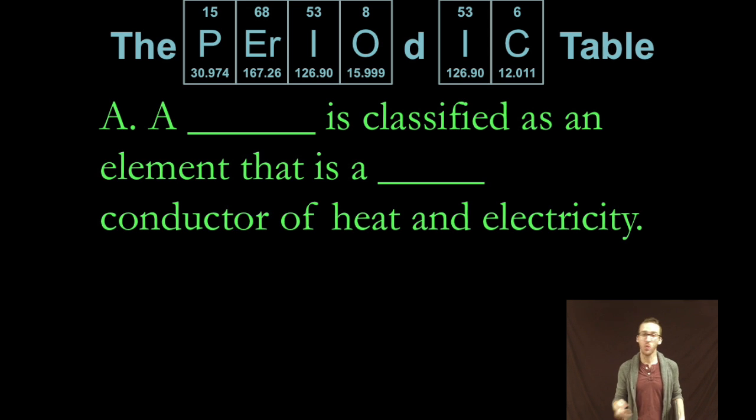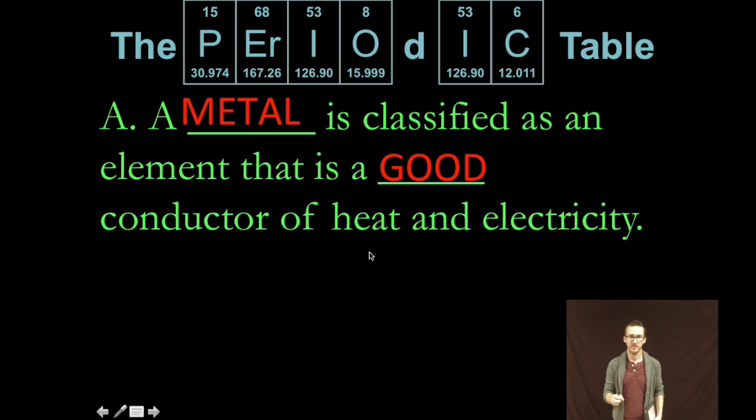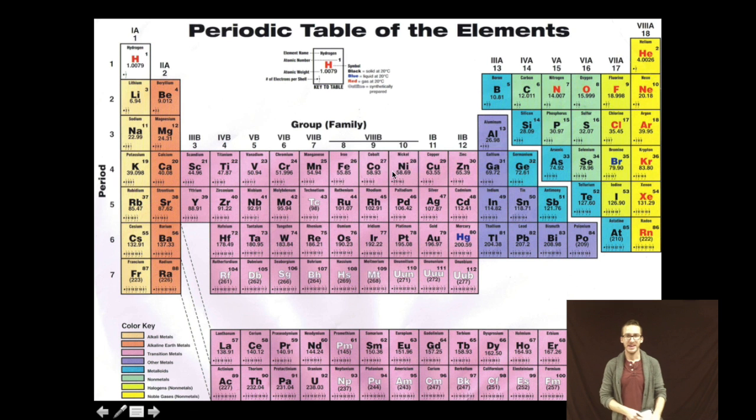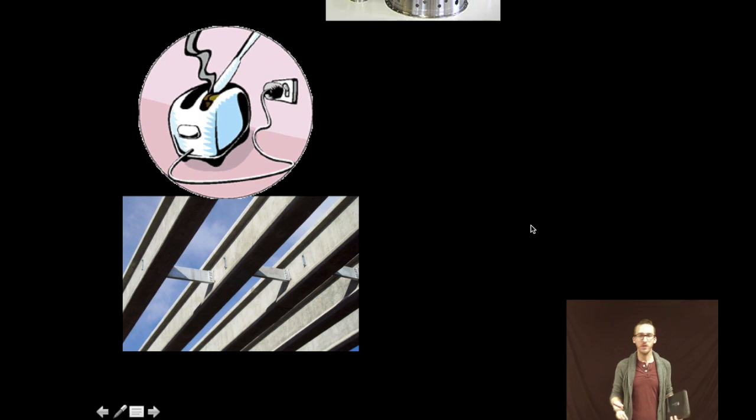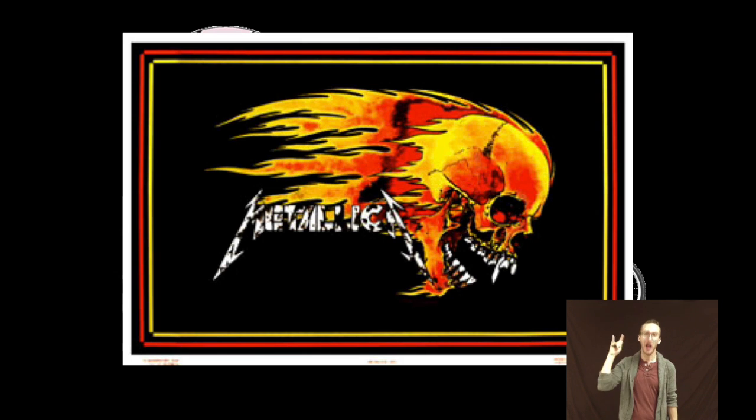Alright so groups and families are just one way to begin to organize and classify elements on the periodic table. We're also going to talk about a couple different general classifications. The first of which is metals. And metals are classified as elements that are good conductors of heat and electricity. In fact metals make up the vast majority of the elements on the periodic table. They're colored here in yellow, orange, pink, and purple. So lots and lots of metals. And you're going to encounter metals all over the place in your everyday lives. We get things like wire, metal pots, appliances, bicycles, and of course heavy metal.